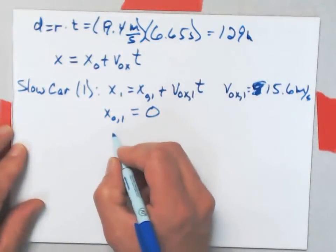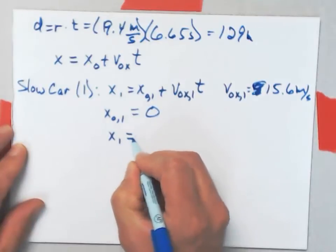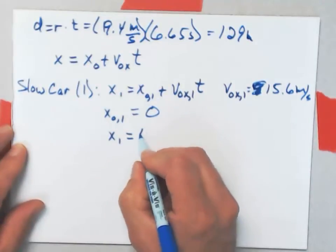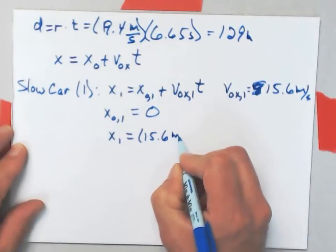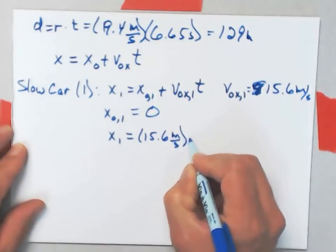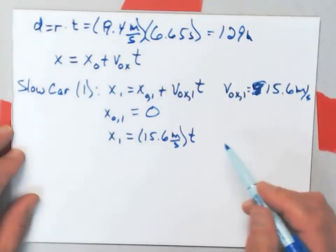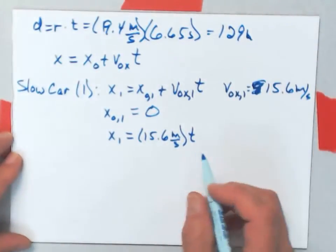So, for that car, the equation becomes x1 is equal to 15.6 meters per second times t. There's its x versus t equation of motion.